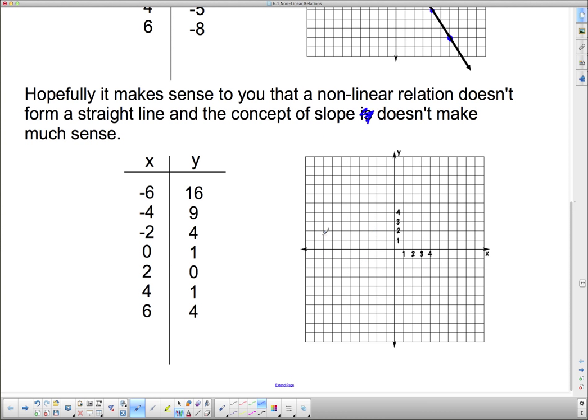Negative 6, 16 I can't actually put on here because I don't go to 16 up here in the y's. But I can put on the negative 4, 9. So here's negative 4 and then 9 will be right here. And the negative 2, 4 I can put on. And the 0, 1 I can put on. And then the 2 and 0 I can put on.